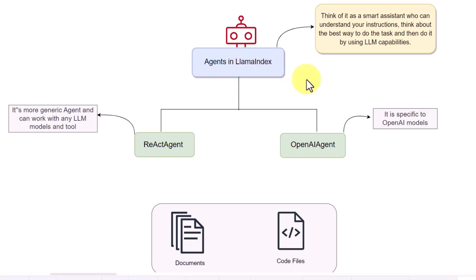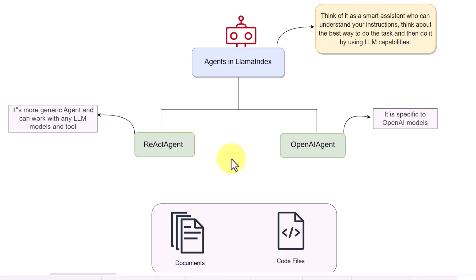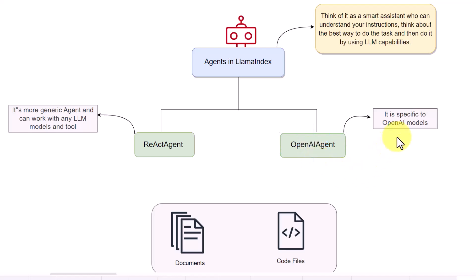In this video, we will cover agents in LlamaIndex. So what exactly is an agent? You can think of an agent as a smart assistant who can understand your instruction, think about the best way to do the task, and then do it by using LLM capabilities. There are mainly two kinds of agents in LlamaIndex: one is a React agent and one is an OpenAI agent. The React agent can be used with any kind of model, including open source models, whereas the OpenAI agent is primarily used with OpenAI models.